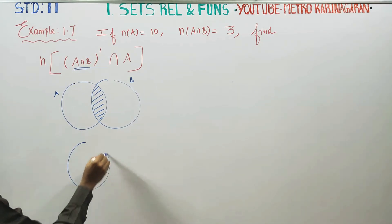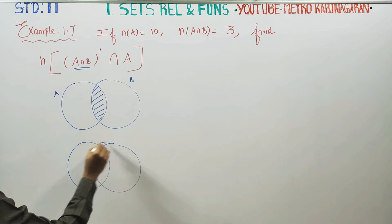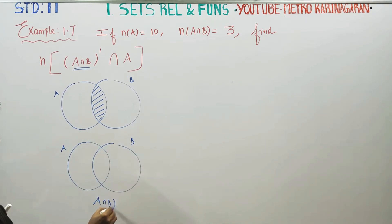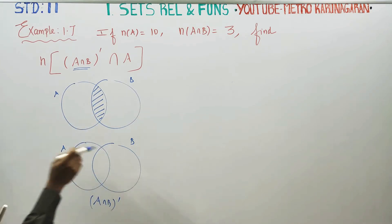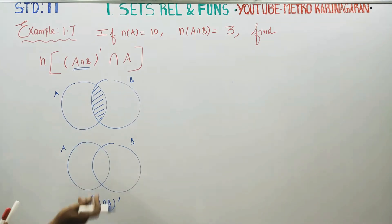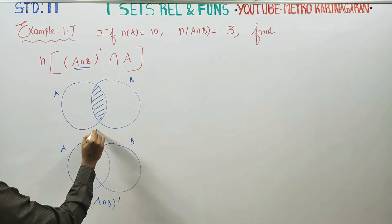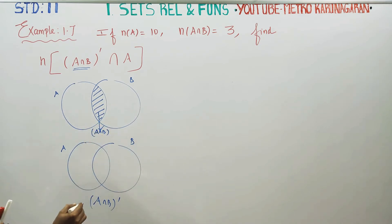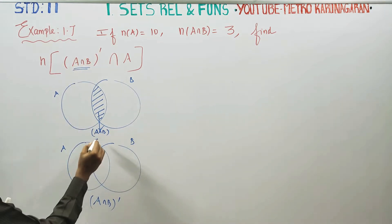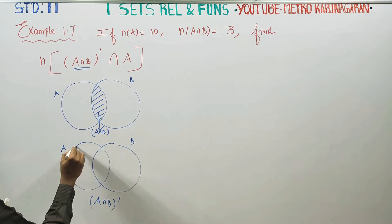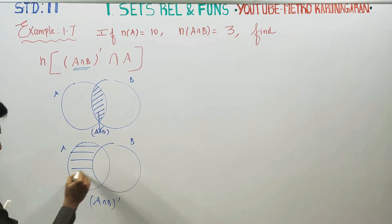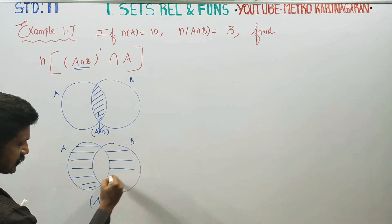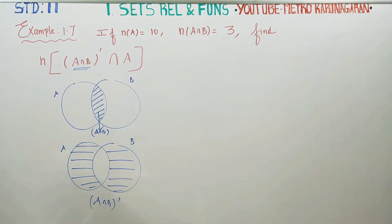What is A intersection B complement (O dash)? A intersection B complement — shade this region. A intersection B is this. A intersection B complement — shade up to this area. This is the full shade region. This is my A intersection B complement.